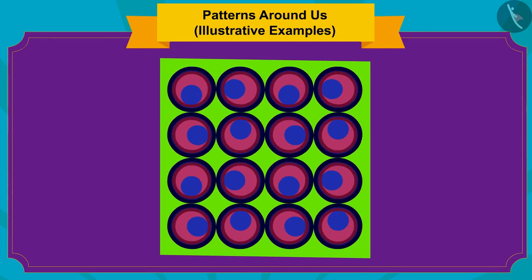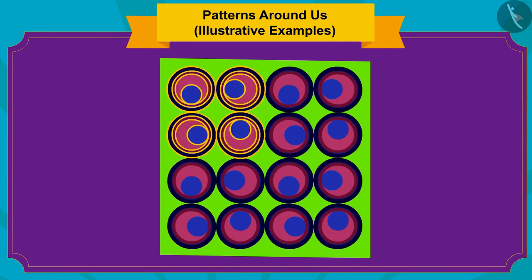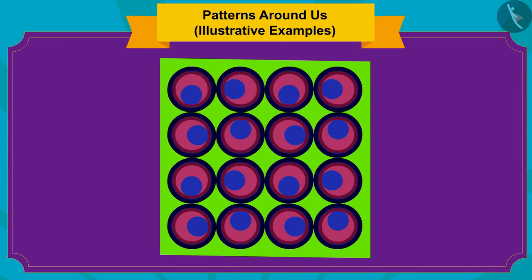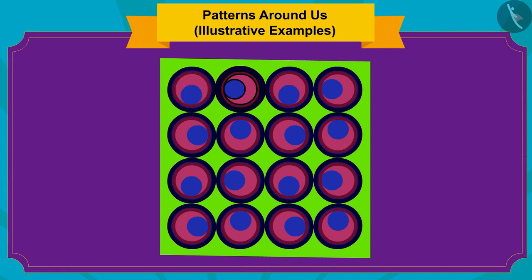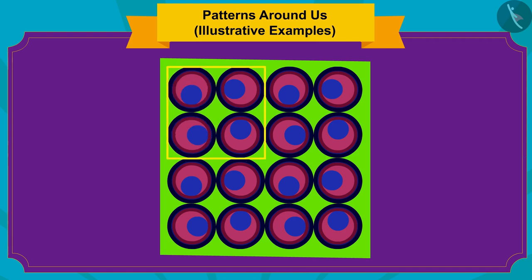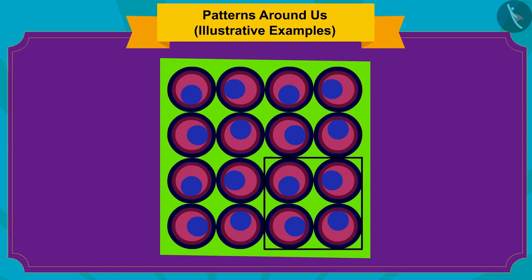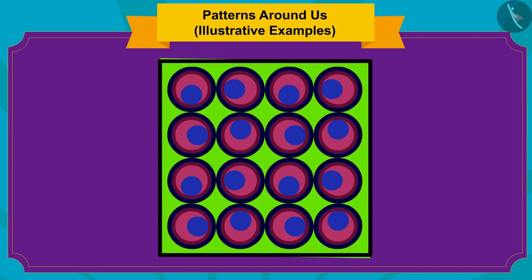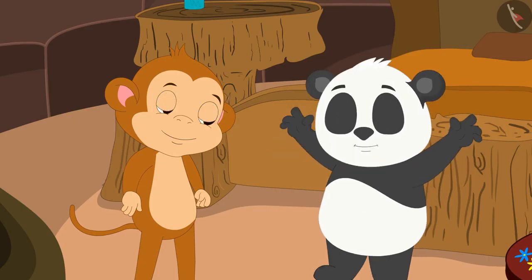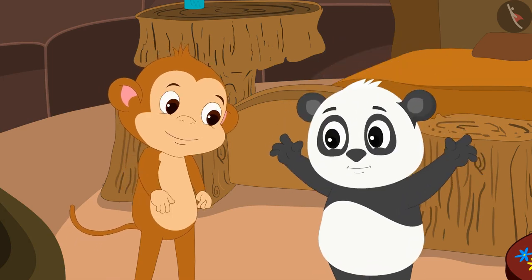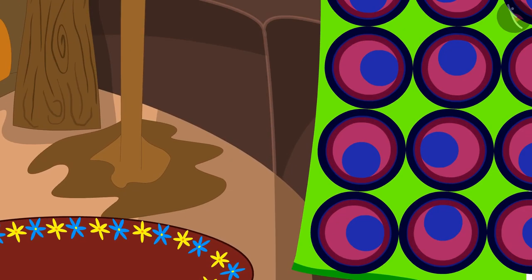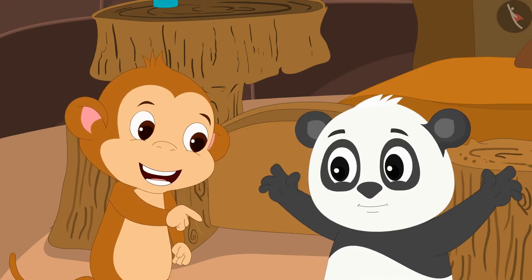Well done, kids! Your answer is absolutely correct! Here, a group has been formed by rotating one shape in different ways, and then by repeating this group of shapes again and again, a unique, beautiful pattern has been made. Golu and Babban were very happy playing the game of finding unique patterns in Golu's house.